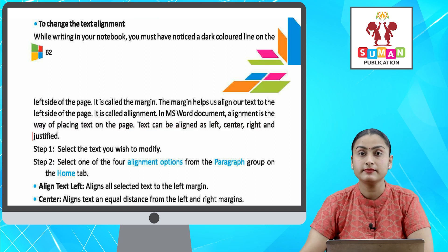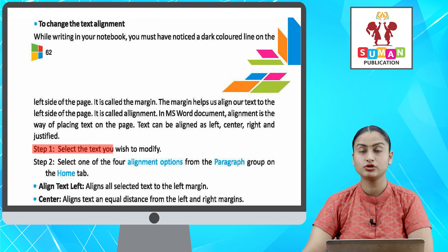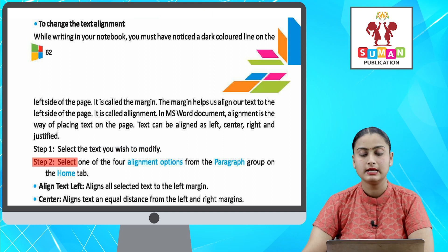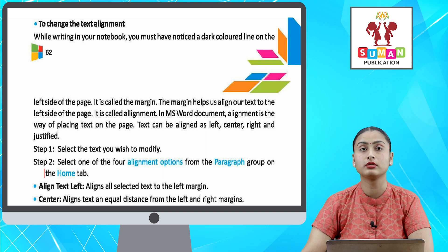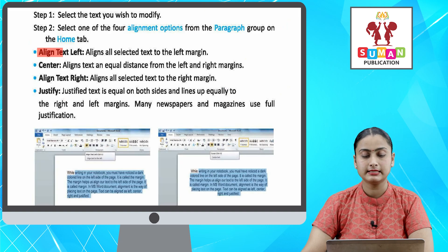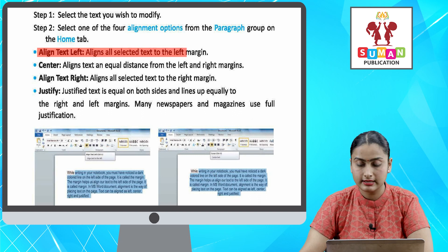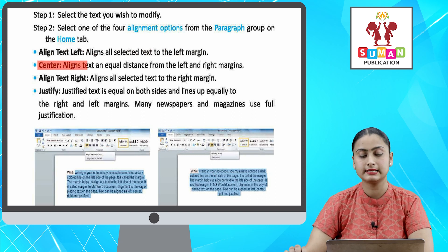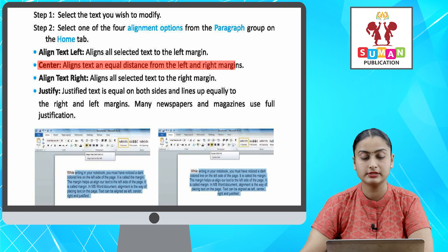Text can be aligned as left, center, right, and justified. Step one: select the text you wish to modify. Step two: select one of the four alignment options from the Paragraph group on the Home tab.